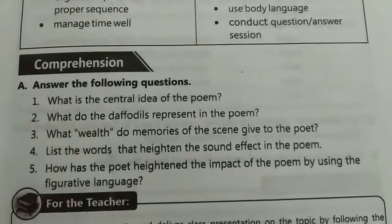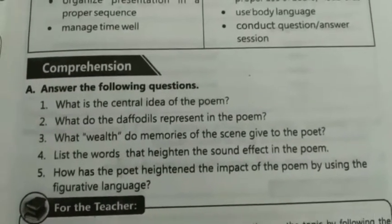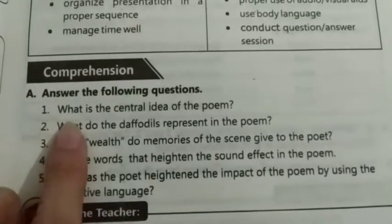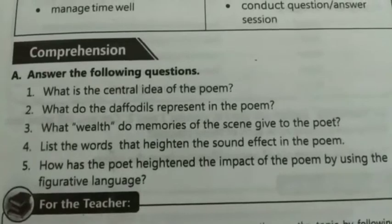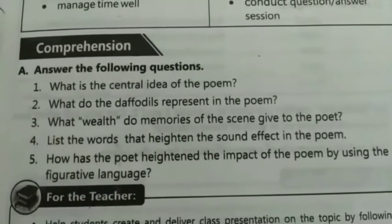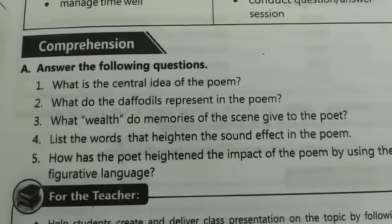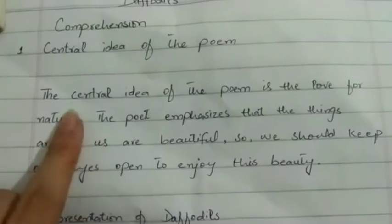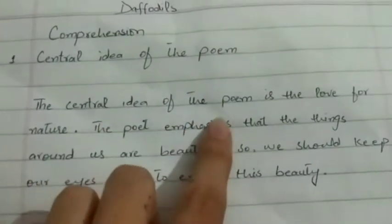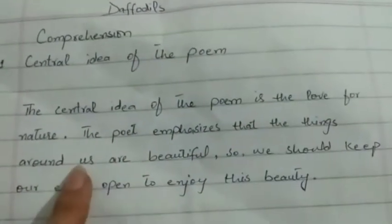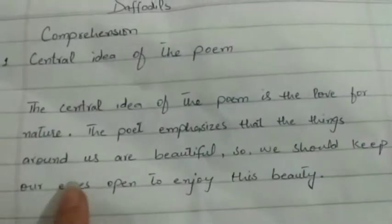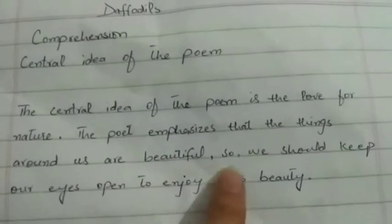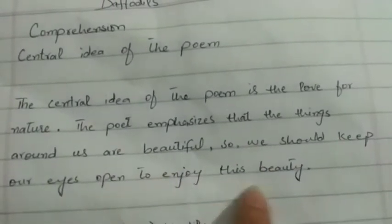Now we have comprehension questions on page number 53. Question number 1: what is the central idea of the poem? The answer is: the central idea of the poem is the love for nature. The poet emphasizes that the things around us are beautiful, so we should keep our eyes open to enjoy this beauty.